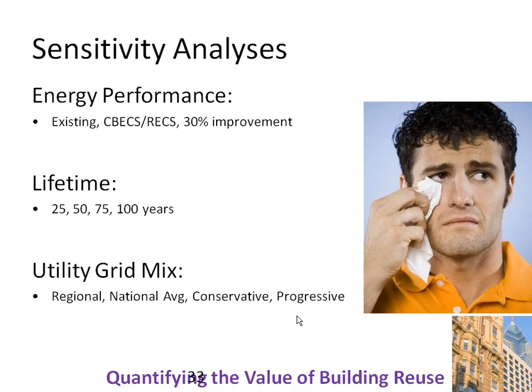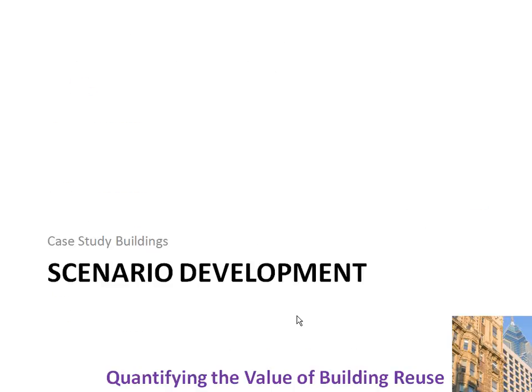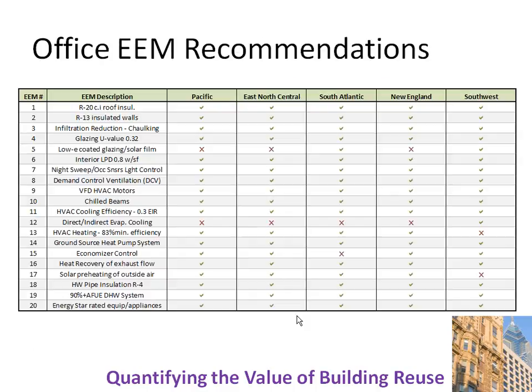We also compared geographically based on climate and the carbon impacts of the utility grid mix. Part of our thinking was comparing a baseline building that meets code to one that's more efficient — understanding that as we drive down operating impacts, we see more of a distinction between the impacts of new construction versus rehabilitation. We also developed a list of energy efficiency measures that could be applied to bring a building up to a code baseline versus a 30% improvement, and we quantified those materials as part of the life cycle assessment.